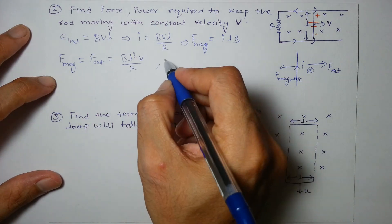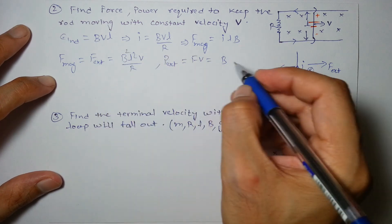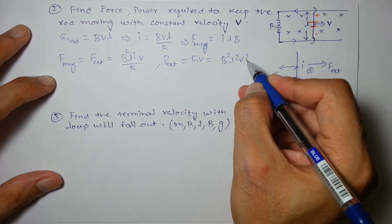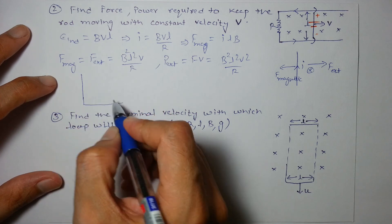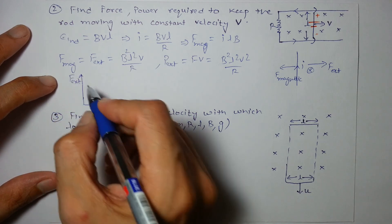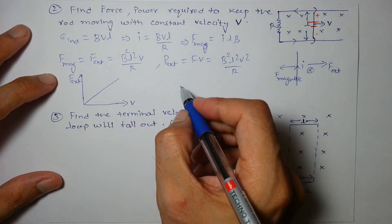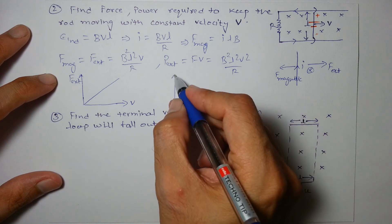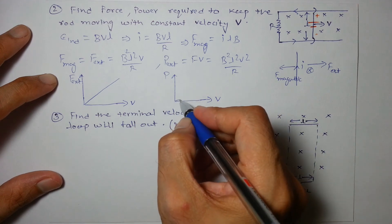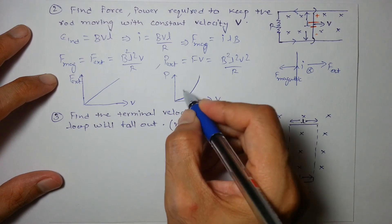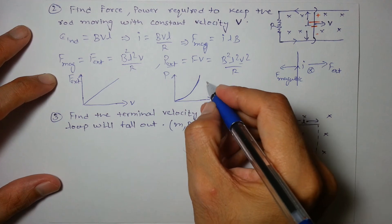The external power is P = F × V = B²L²V² / R. If you plot F_external versus V, it is a straight line. If you plot power versus V, the function is parabolic — power versus V is a parabola.